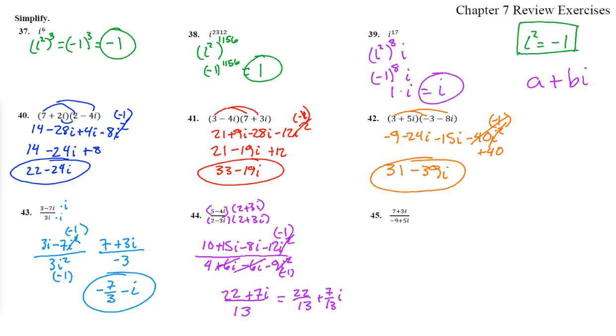Number 45, times by the conjugate again. That's negative 9 minus 5i on top and bottom. We should notice that timesing by the conjugate did exactly what we wanted. We no longer have imaginary numbers in the denominator.